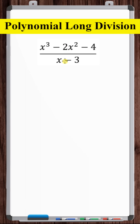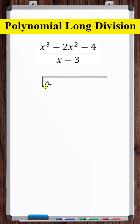Okay, let's divide these two polynomials. Start by drawing your division symbol, then write your dividend, but make sure to add all of the missing variables. So for example, here we have x cubed minus 2x squared plus 0x minus 4.